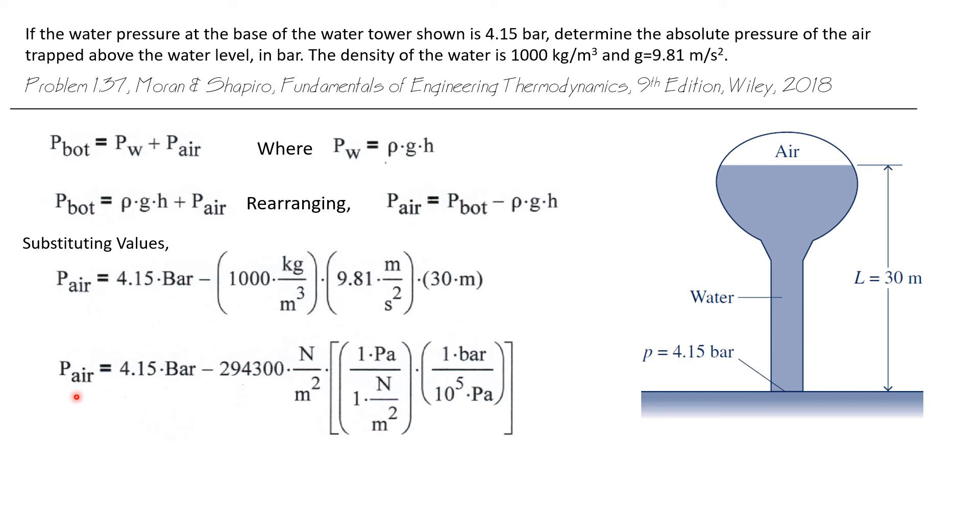So we have the pressure of the air is 4.15 bar minus, we multiply all of these terms together, I get 294,300 newtons per square meter. We need to convert that to bar. One newton per square meter is a Pascal and there are 10 to the fifth Pascal in one bar.